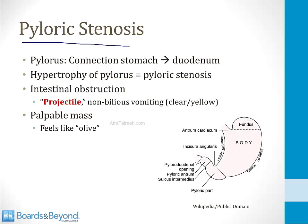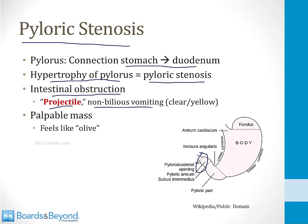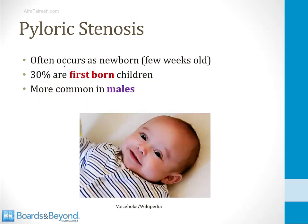Pyloric stenosis results from hypertrophy of the pylorus — the connection between the stomach and duodenum — causing intestinal obstruction. Classic presentation is projectile non-bilious vomiting in a newborn, since the obstruction occurs before bile enters the small intestine. A palpable olive-like mass is another key finding. Symptoms usually develop in the first few weeks of life; 30% of babies with pyloric stenosis are firstborn children, and it is more common in males.